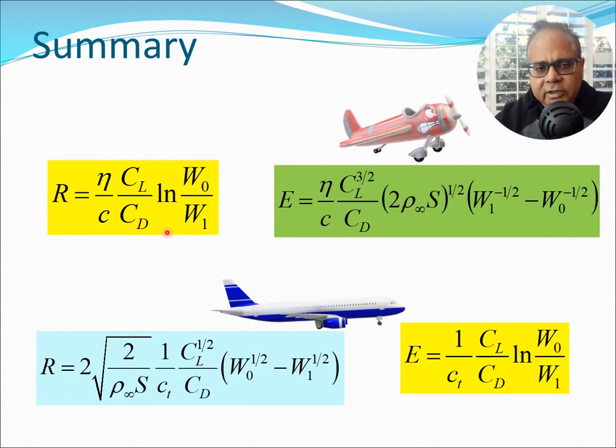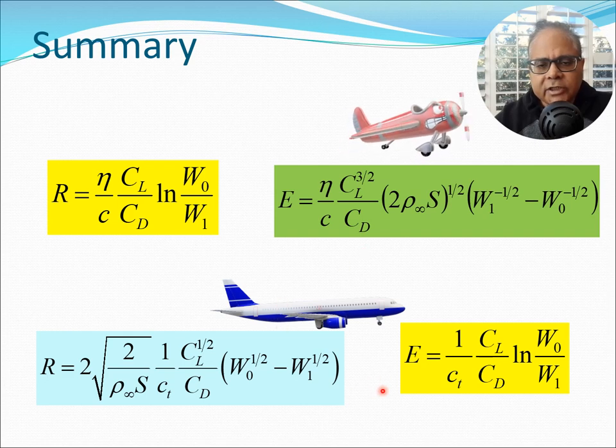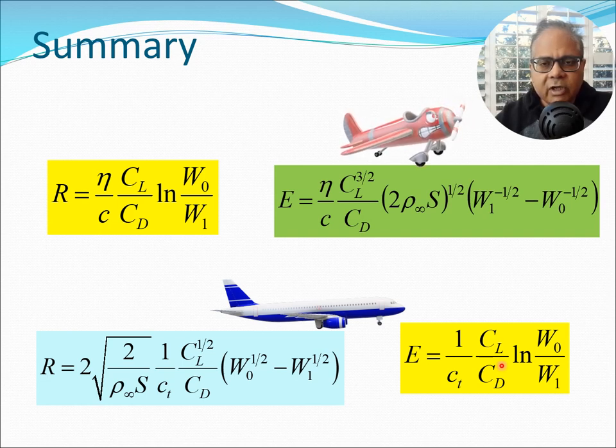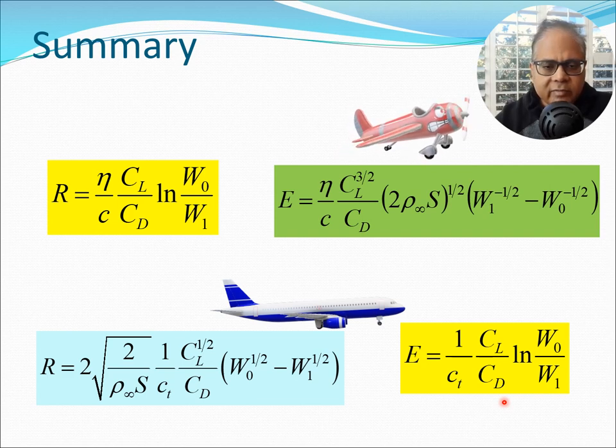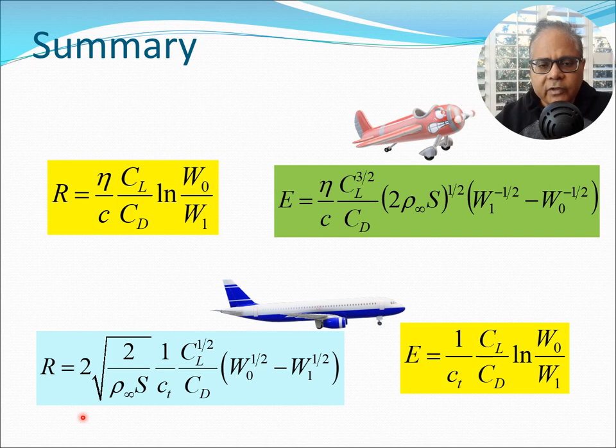Finally to summarize, the different endurance and range of different aircraft are given here. For the propeller we obtained in the previous two classes range is given by this thing in yellow, endurance in this box in green, and for a jet the endurance is given by this box in yellow here. You can clearly see there is some analogy between the endurance equation and the range equation for the jet and the propeller respectively. In both these cases CL by CD has to be maximized during the flight. That is the driver as far as the aircraft performance is concerned. If you want to maximize endurance you have to fly it such that CL by CD gets maximized for the jet, and for the propeller you want to maximize range at the point where CL by CD gets maximized. Now the thing which remains is range of the jet, and that is this equation here. That's something quite different. It's directly related to CL half by CD and we are going to derive this in our next lecture.